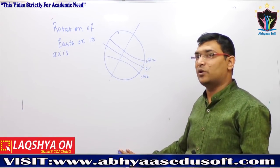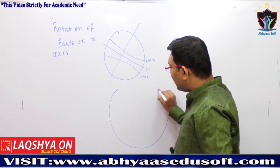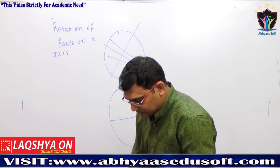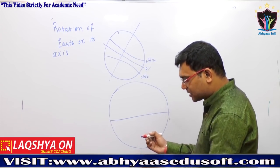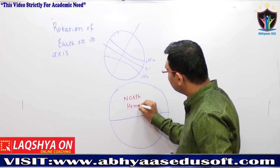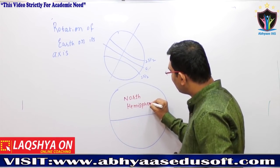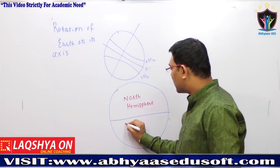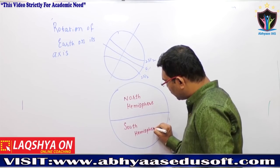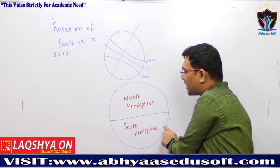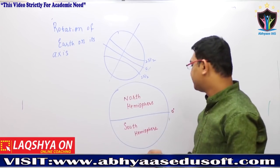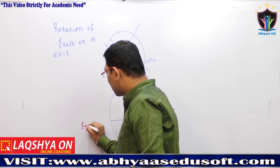First we need to study how the earth is divided. The earth is divided into two halves. The first half is called the North Hemisphere, and the southern part is called the South Hemisphere. The line dividing them is at zero degrees, which is nothing but the equator.